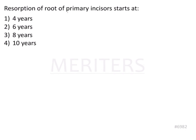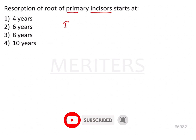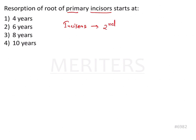This is a straightforward question. The question is: resorption of root of primary incisors starts at? The resorption of the primary incisors will occur only when the formation of the crown of the permanent counterpart has been done and they start erupting. The incisors are the second permanent teeth to erupt, after the molars of course.